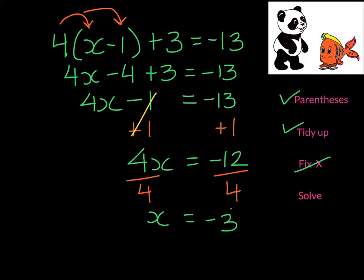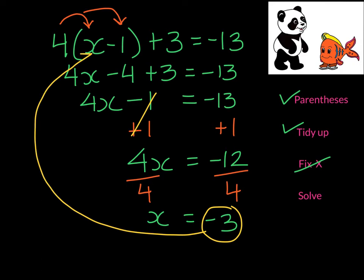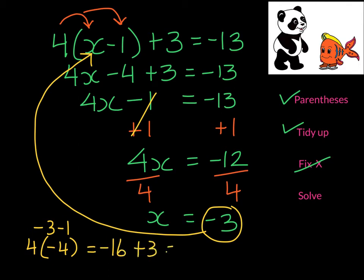At this point we can substitute into our equation and say: negative 3 subtracted 1 gives me negative 4. If I multiply that by 4, I get negative 16. And if I add 3, I do indeed get negative 13.